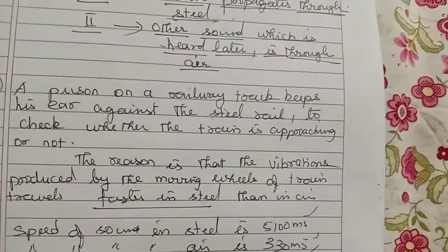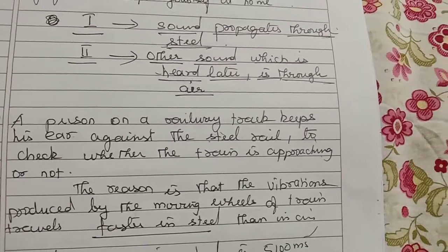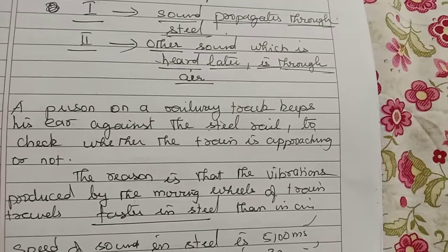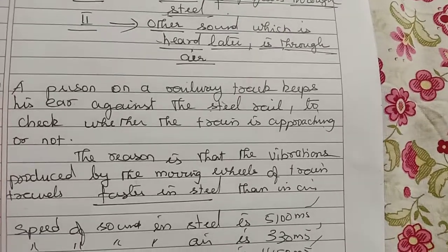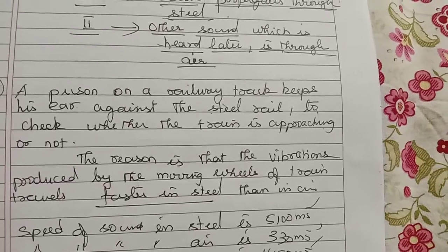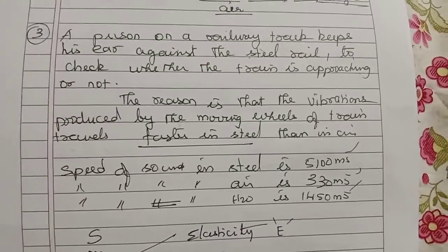One more last experiment or activity: a person on a railway track keeps his ear against the steel rail to check whether the train is approaching or not. What is the reason? The vibrations produced by the moving beams of the train travel faster in steel than in air. So from these three experiments,